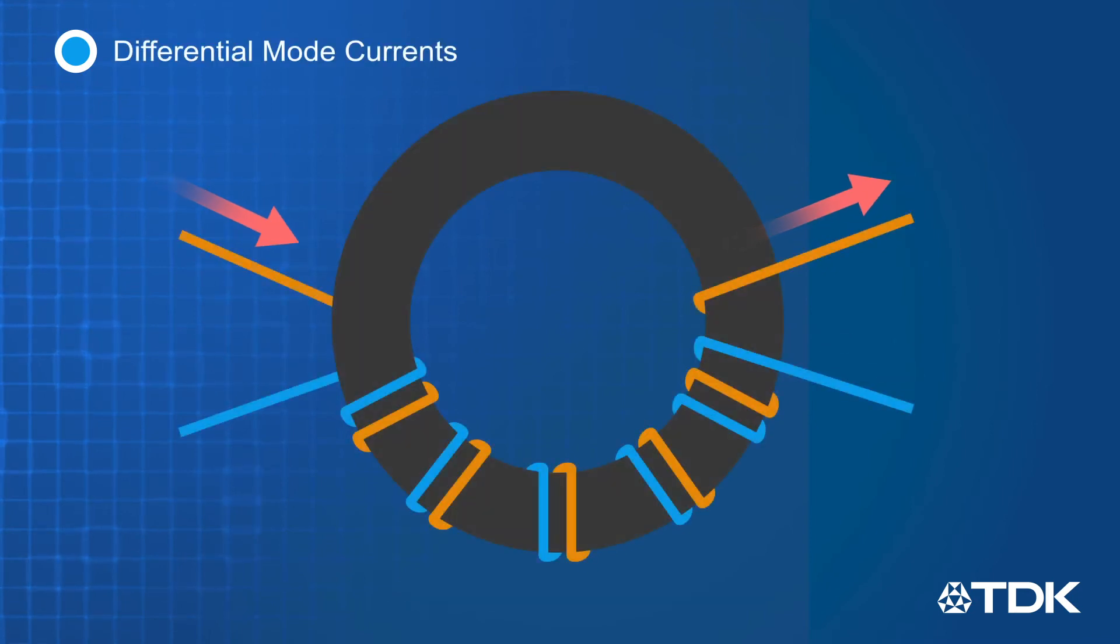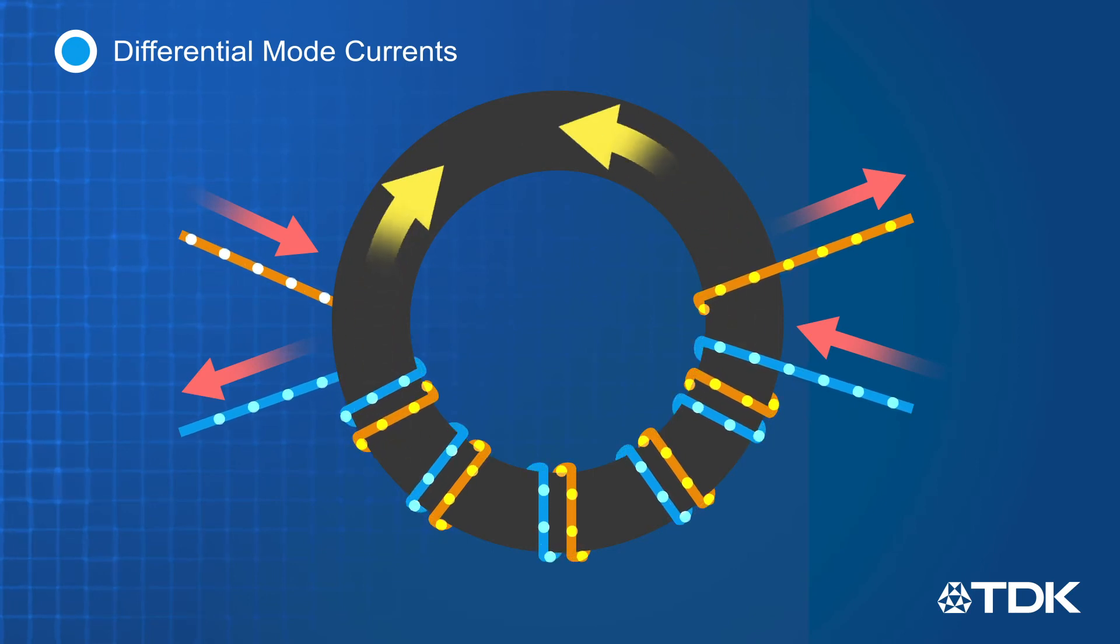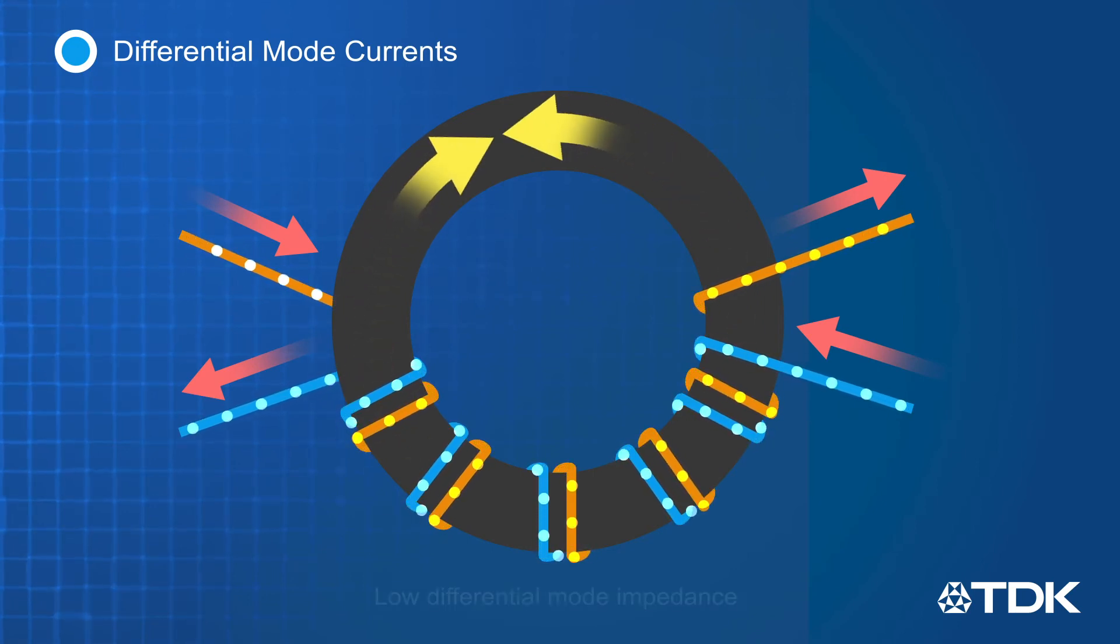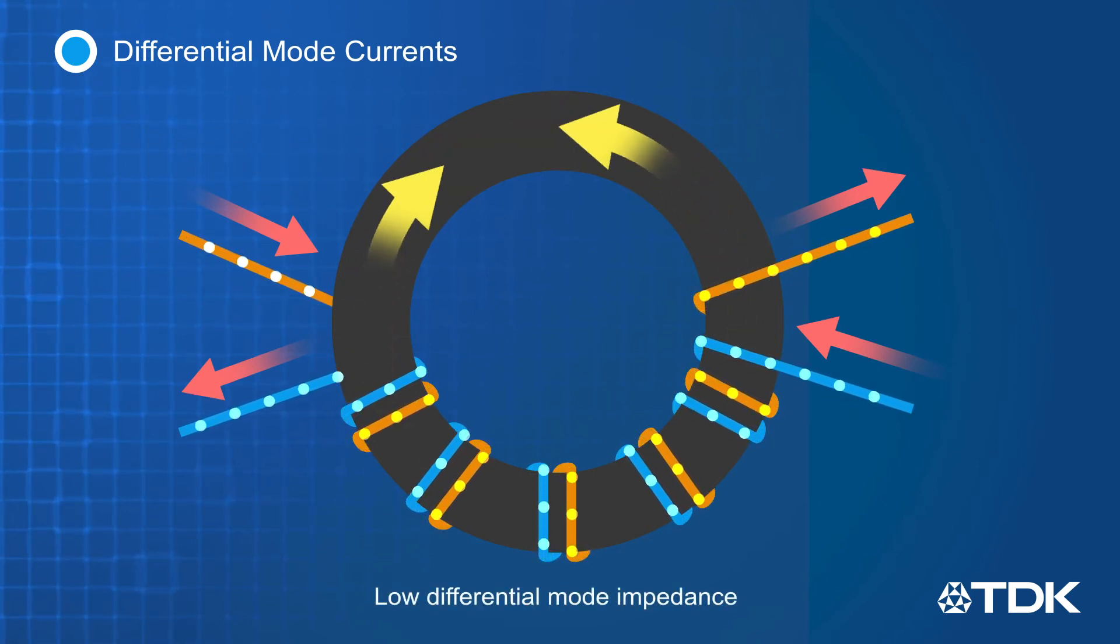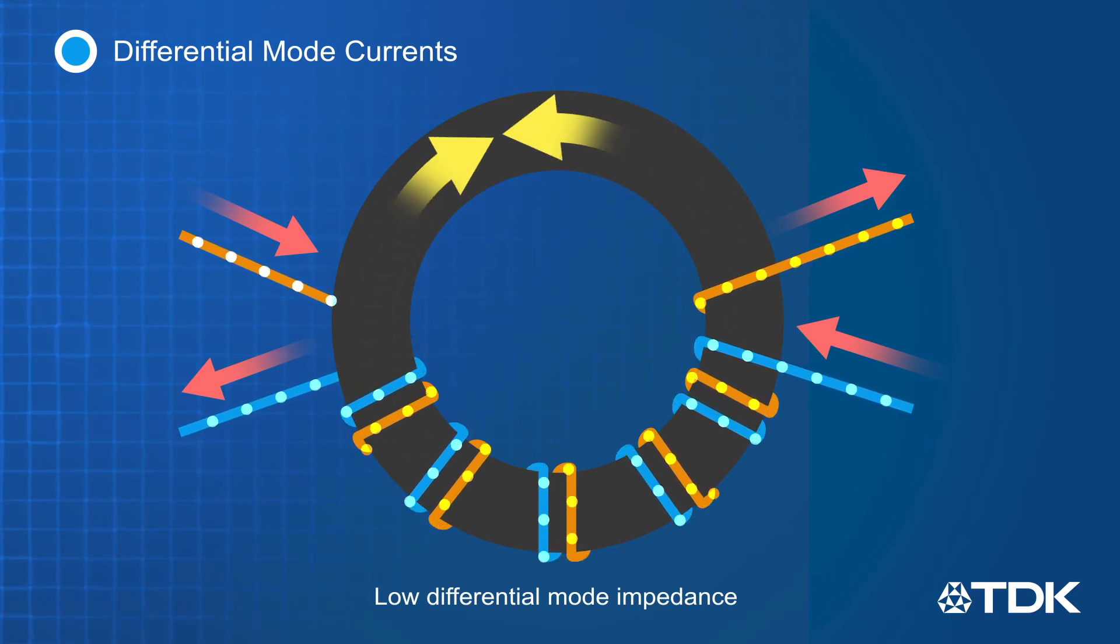Differential mode currents flow in opposite directions, and the magnetic fields that these currents generate cancel each other out. This results in low differential mode impedance and allows the desired differential signals to freely pass through the wires.